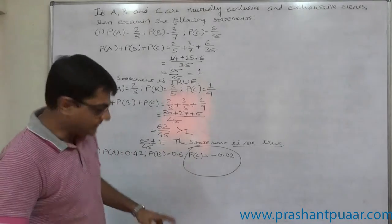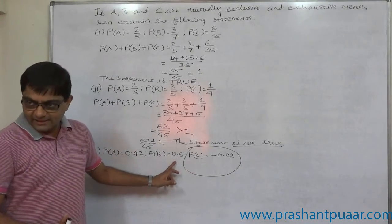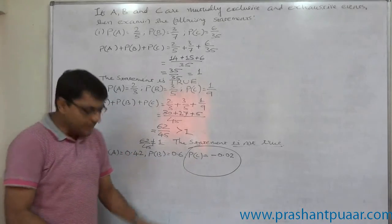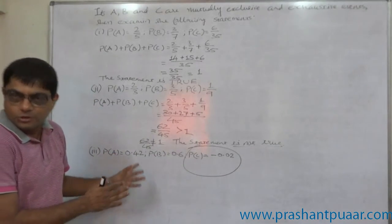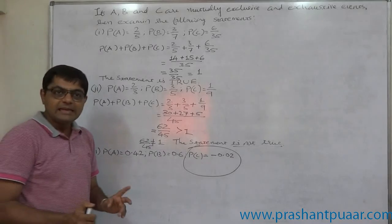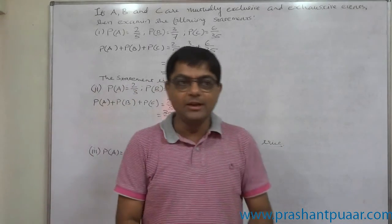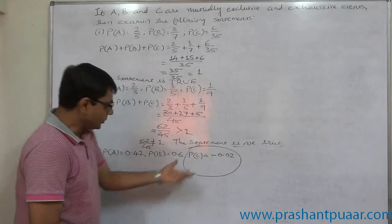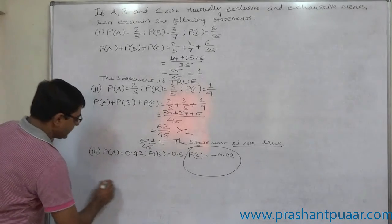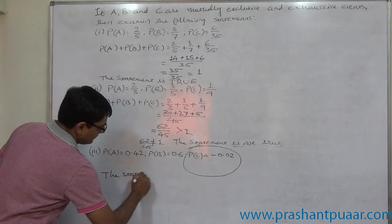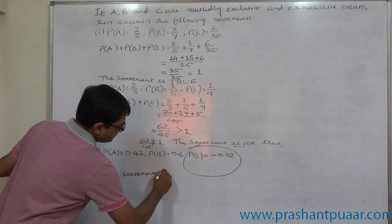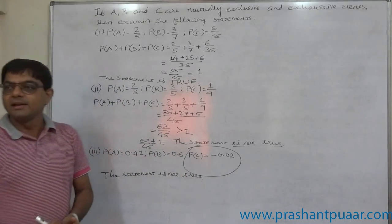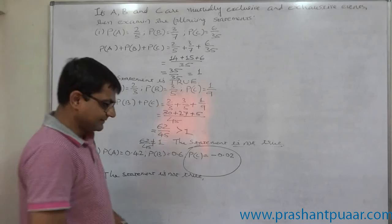If you try to get summation 0.42 plus 0.6 is 1.02 minus 0.02, it comes to one, but it is wrong because the statement is not true. Why? No probability can be negative. Probability of any event is always between 0 and 1. It can never be negative. So without any arithmetical process, we should say that the statement is not true because probability can never be negative.